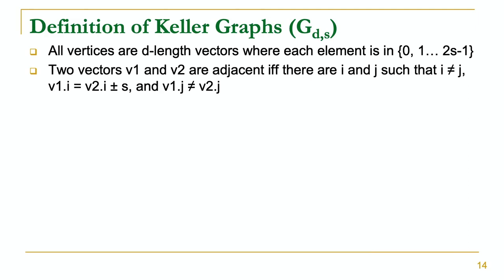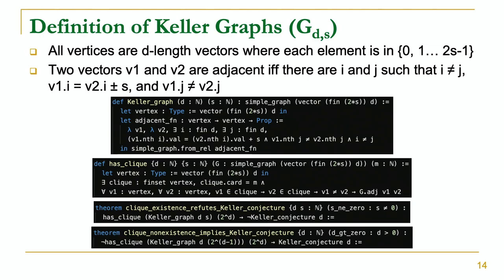For a particular Keller graph G_{D,S}, the definition is as follows: all vertices are D-length vectors where each element is from 0 to 2S minus 1, and two vectors V1 and V2 are adjacent if and only if they differ in at least two coordinates, and in at least one coordinate they differ by exactly S. Differing in at least two coordinates guarantees there isn't face-sharing, and differing by exactly S guarantees there aren't any gaps or intersections. The formal definitions are pretty straightforward to write down using a simple graph library.